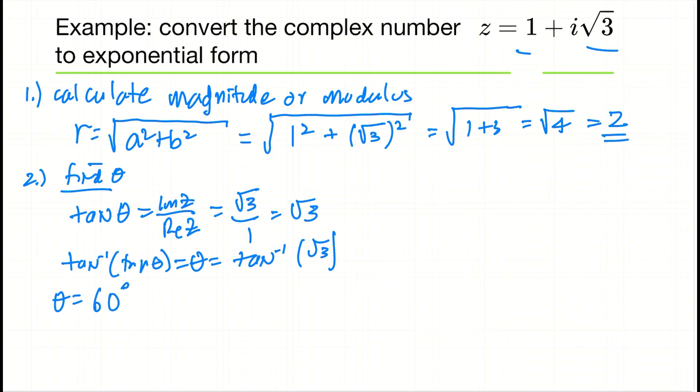So now our complex number written in exponential form is going to look like r, which is 2, times e^(iθ), where theta is 60 degrees. So there's our answer.